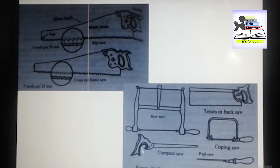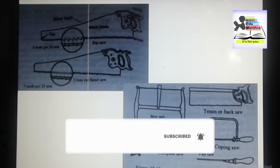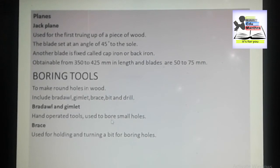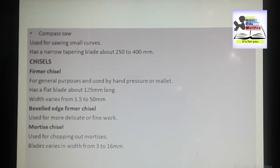Here is the figure for the tenon or back saw — it is used for finer cuts. Next we have the compass saw. The compass saw is used for sawing small curves in confined spaces. It has a narrow tapering blade of about 250 to 400 mm.